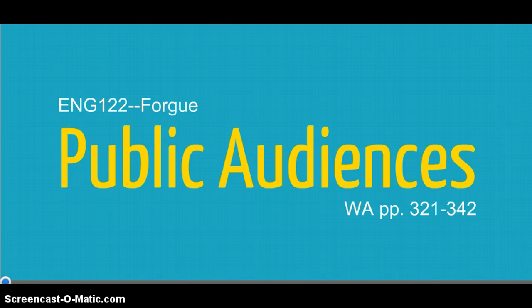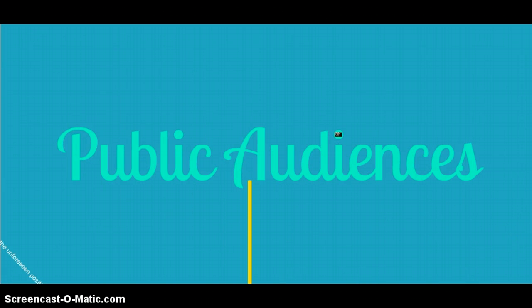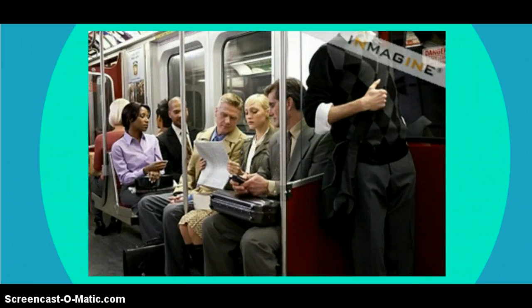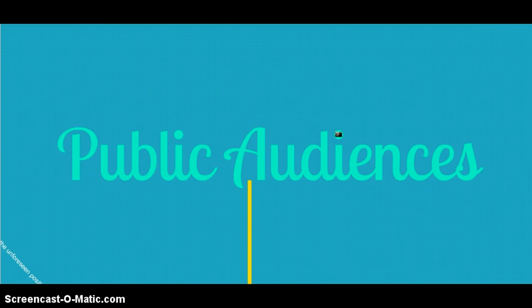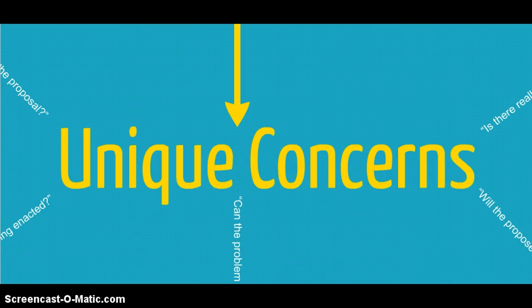English 122, Day 24: Public Audiences, from Writing Arguments, pages 321 to 342. Writing for public audiences, like the ones you will be targeting for the public campaign assignment, involves unique concerns that wouldn't apply to a more limited readership.